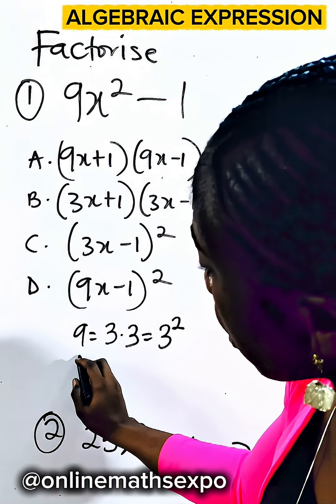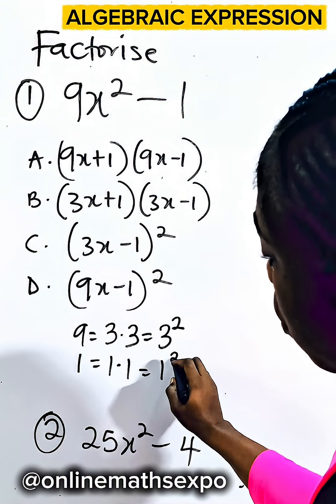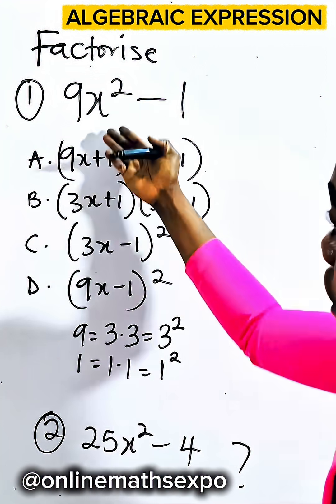1 is also a square number because 1 is 1 times 1, which is 1 squared. So how do we do this?